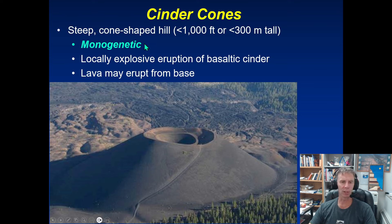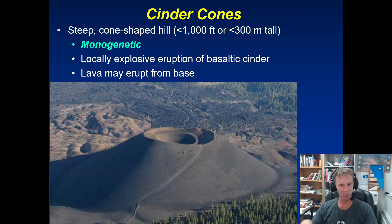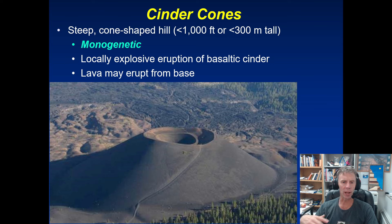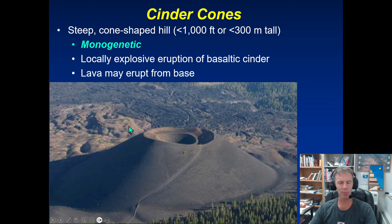Cinder cones are what we call monogenetic volcanoes — they just erupt once, as opposed to stratovolcanoes, which are polygenetic and have multiple episodes of eruptions. Cinder cones pretty much just have their one eruptive phase, and when it's over, it's over. You might get another cinder cone developing nearby, but that specific cone, once it has its heyday, is over and done with. That's why you see cinder cones occupying large fields — if you find one cinder cone, look around and you'll probably find several. They often form in groupings of sometimes hundreds in a specific region.